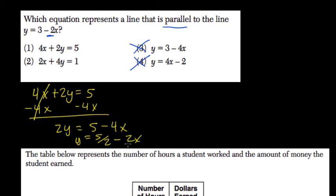So here the slopes are the same and the y-intercepts are different, so they're parallel. And that's choice number 1.